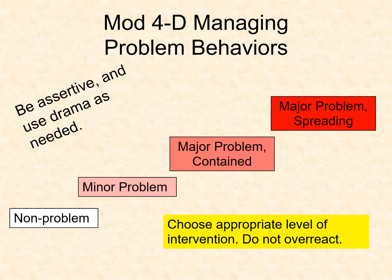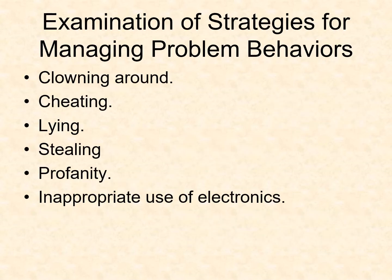In Module 4, we turned our attention toward managing more problematic behaviors and more serious issues. We started by summarizing the work of many researchers, classifying problems as non-issues, minor problems, major problems contained within a few students, or at the more serious level, major problems starting to spread throughout the class. We then looked at strategies to manage problem behaviors such as clowning around, cheating, lying, stealing, use of profanity, and inappropriate use of electronics.